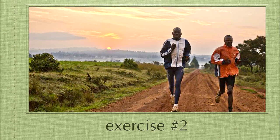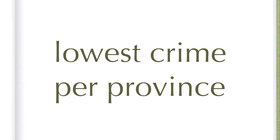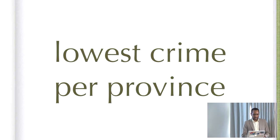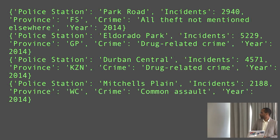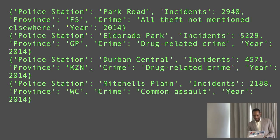The second exercise is essentially the same as before — group by province, then group by crime, and find which crime has the lowest number of incidents per province — but this time use Meza functions to make your life easier.